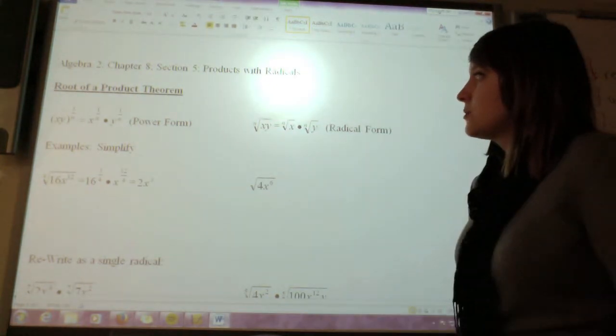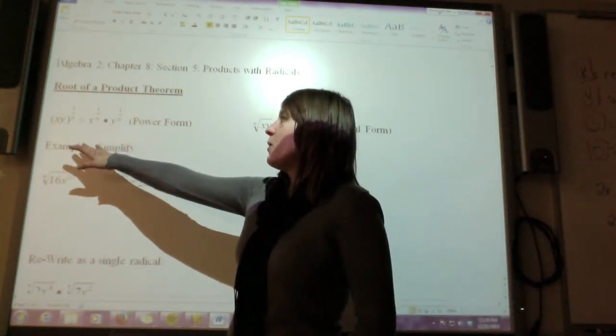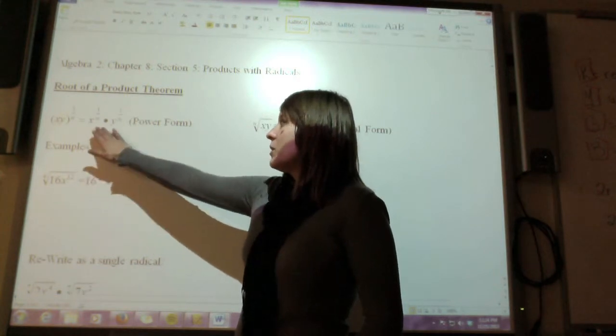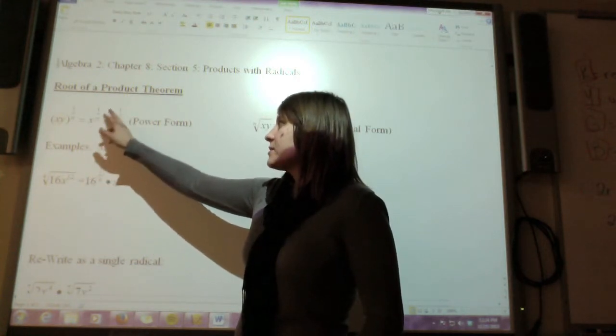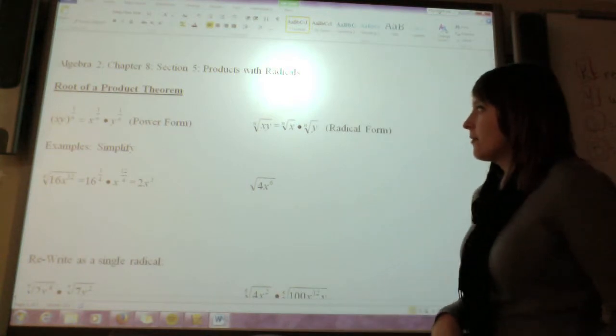So the first thing we have is the root of a product theorem, and that says that if you have x times y to the 1 over n, what you can do is you can split that up into x to the 1 over n times y to the 1 over n, and that's in your power form.